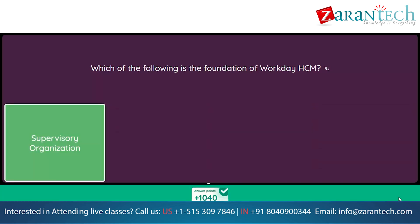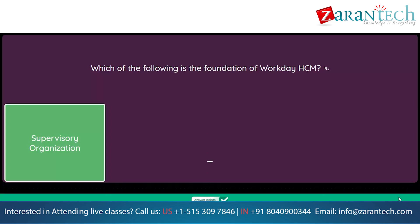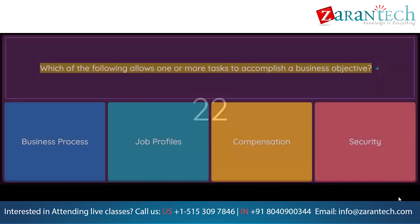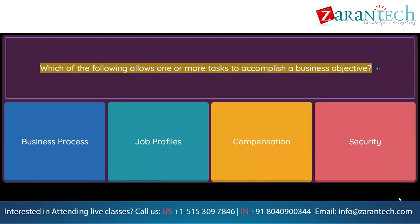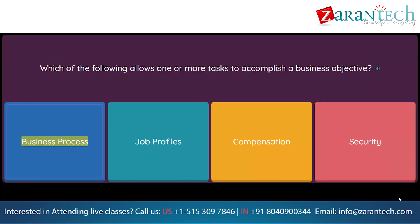Which of the following allows one or more tasks to accomplish a business objective? Option 1: Business Process. Option 2: Job Profiles. Option 3: Compensation. Option 4: Security.